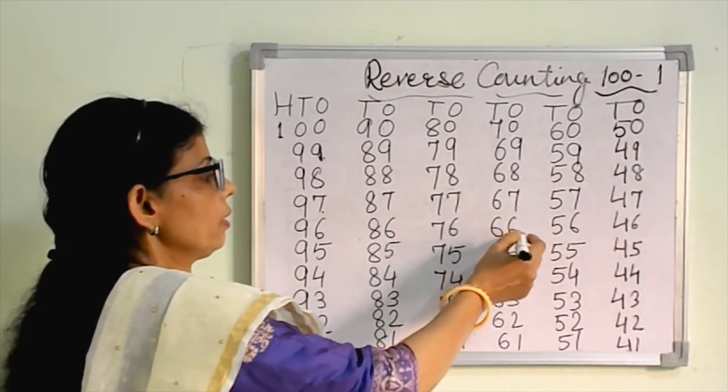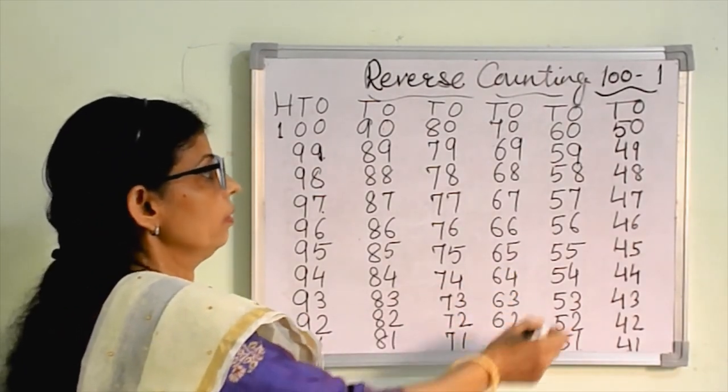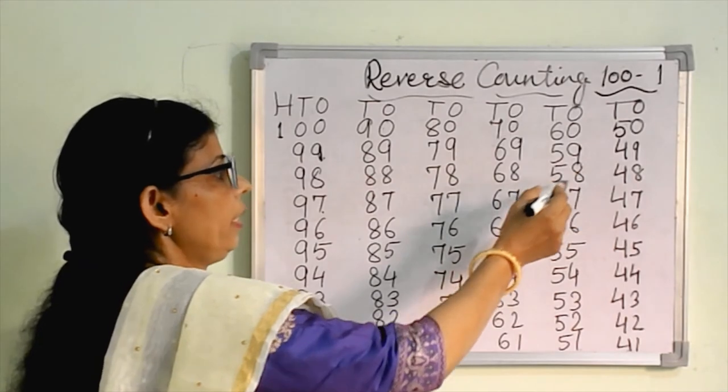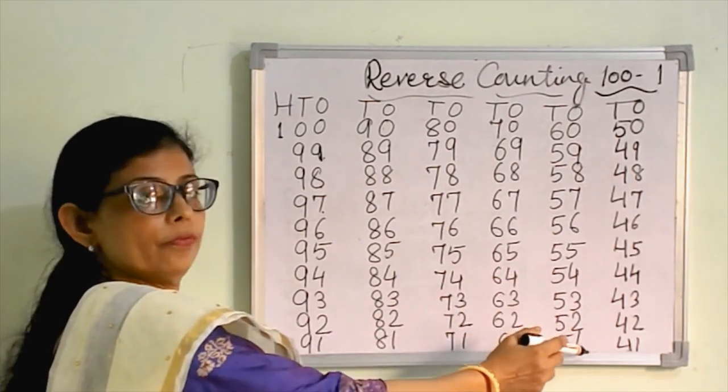Here is sixty. What comes before sixty? Fifty-nine. You will write here fifty-nine, fifty-eight, fifty-seven, fifty-six, fifty-five, fifty-four, fifty-three, fifty-two, and last one fifty-one.